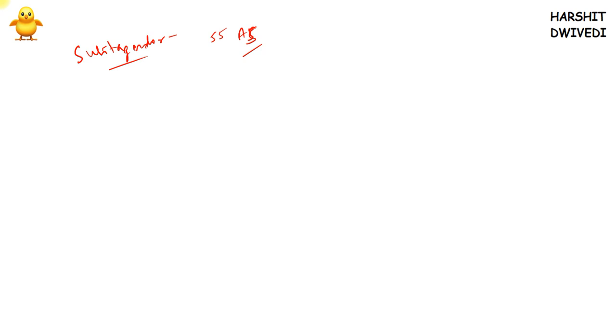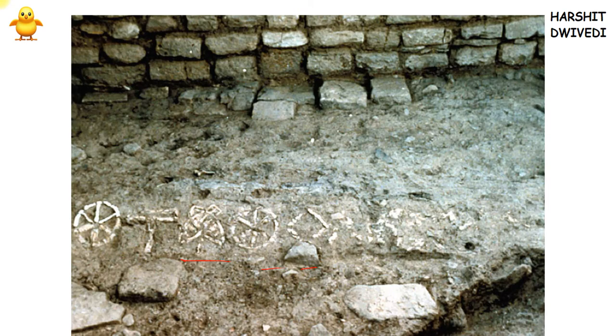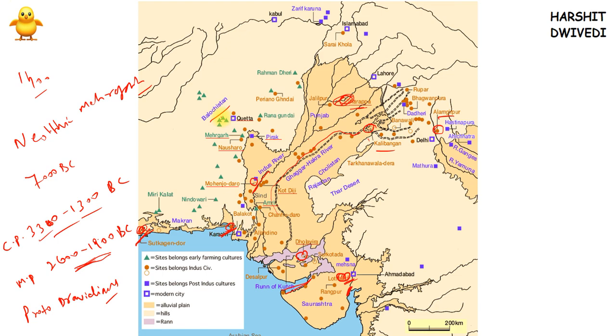Kot Diji is located on the bank of the Indus River. Many statues of bulls and mother goddess have been found there. The mother goddess is a recurring phenomenon throughout the Indus Valley civilization.